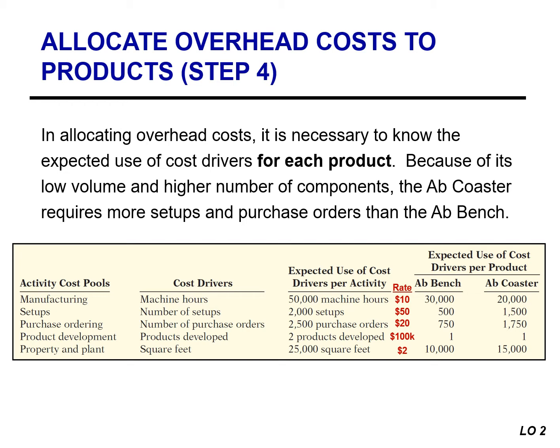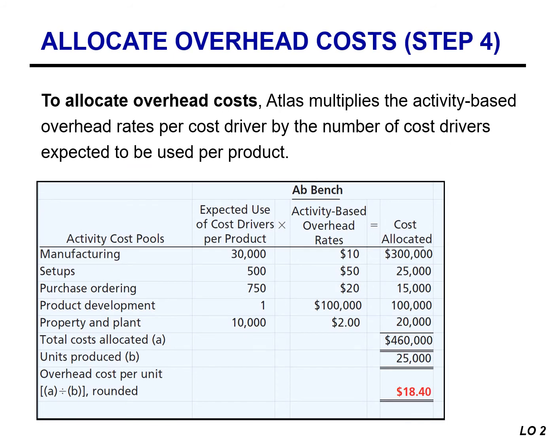For setups, the activity-based overhead rate is $50,000, multiplied by 500 setups for the ABB Bench, and by 1,500 setups for the ABB Coaster. Taking the expected use of cost drivers per product and multiplying by the activity-based overhead rates for all cost pools, the total overhead costs allocated to the ABB Bench are $460,000. They expect to produce 25,000 units, so the overhead cost per unit is $18.40.